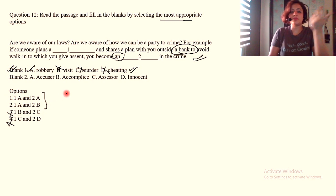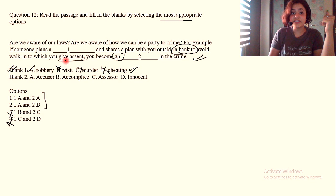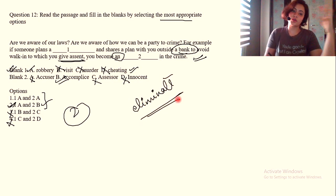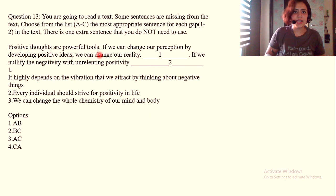Eliminate all options which do not have number one as option A. Now we're stuck with two options and just need to eliminate one of the two. Outside a bank, to avoid walking, to which you give assent, you become an accuser? No, you're with the person. Accomplice? Yes. Assessor? What's an assessor here? Innocent? Absolutely not. So our answer is two. This is how you eliminate, get to the answer. It's a full process you need to do continuously to get to the answer in the shortest possible time.